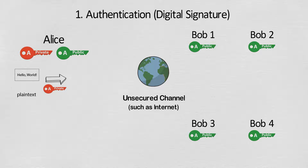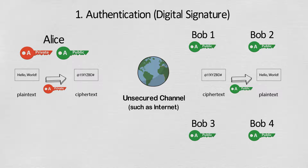Alice will use her private key to encrypt the message and send it to all the employees. The employees will use Alice's public key to decrypt the message. The fact that Alice's public key is able to decrypt the message implies that the message must have been encrypted using Alice's private key. As only Alice has access to her private key, the message is definitely sent by Alice.